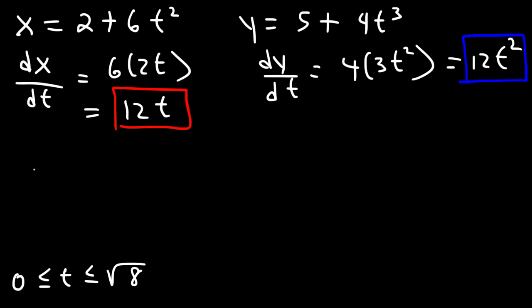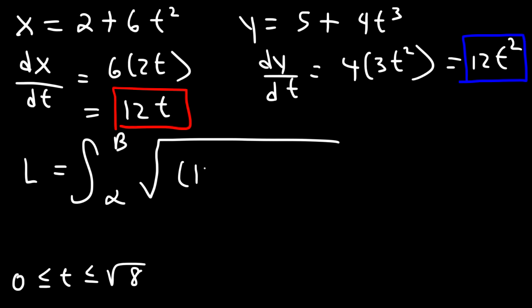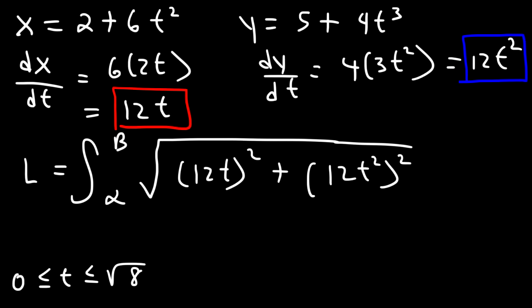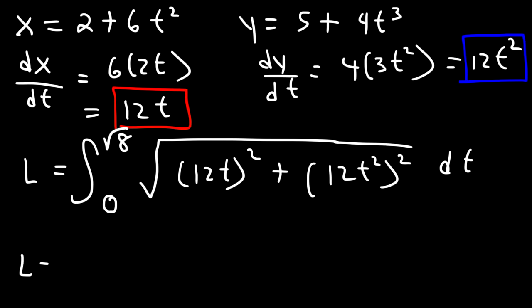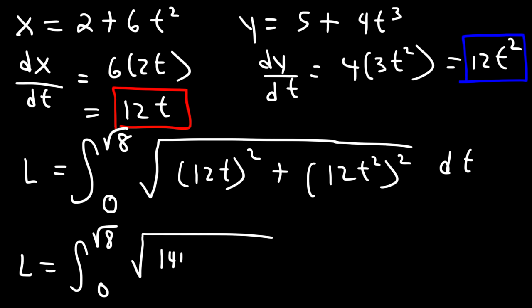So now we can determine the arc length using this formula. It's the integral from alpha to beta of the square root of dx/dt squared plus dy/dt squared, where alpha is 0 and beta is the square root of 8. Now let's simplify: 12 squared is 144, so we're going to have 144t squared. And 12t squared, squared, that's going to be 144 times t to the fourth power.